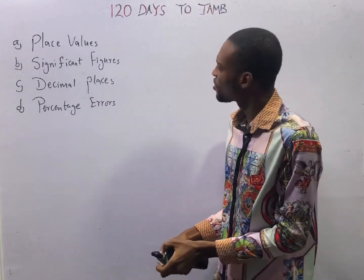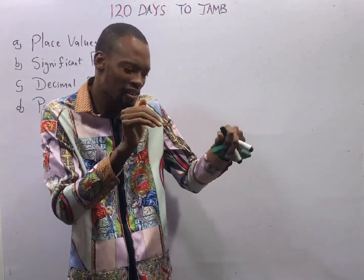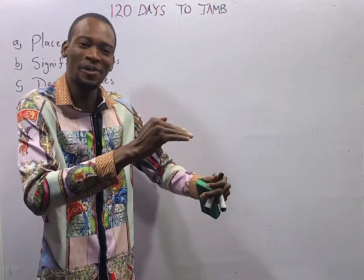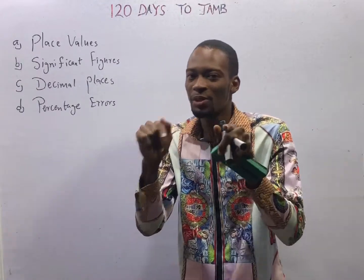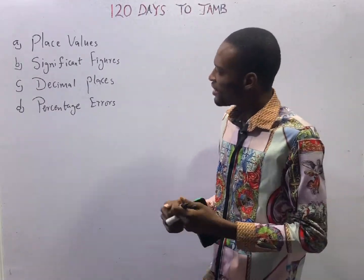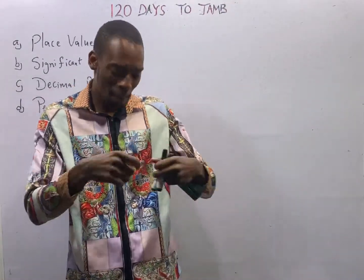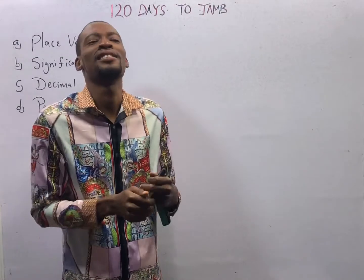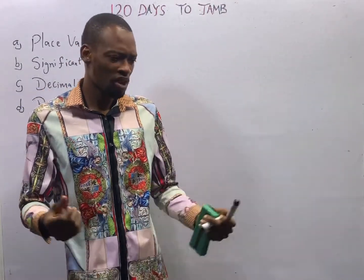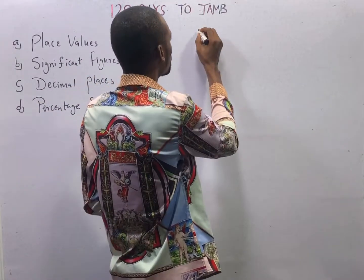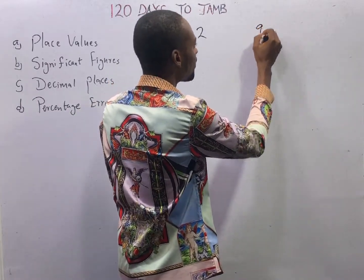The place value of a number is simply the value — the magnitude of that number — by virtue of its position. Look at it. The value of numbers are not generally based on their size. It is generally based on the position of the number. For example, if I say 2, I write another number, 9.